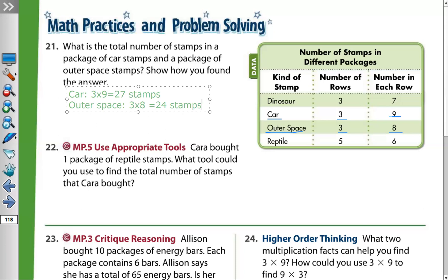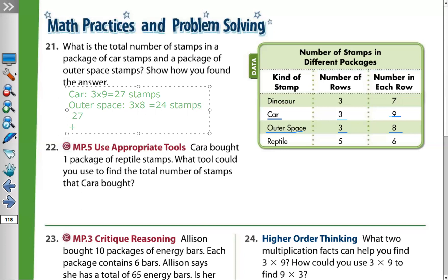Then we want the total number of stamps, which means twenty-seven plus twenty-four. Starting from the right: four plus seven equals eleven, write one carry one. Then one plus two plus two equals five. So the total is fifty-one stamps in both packages.